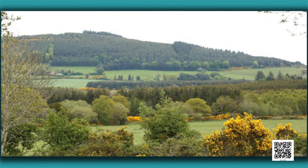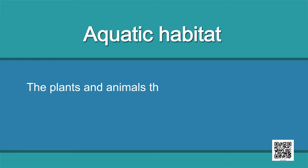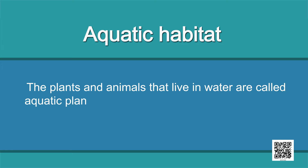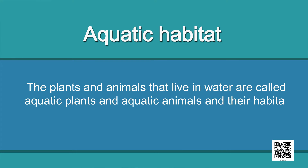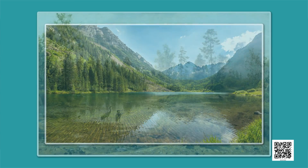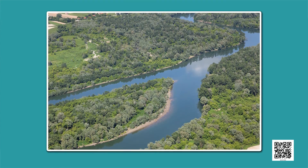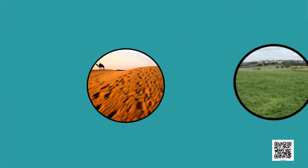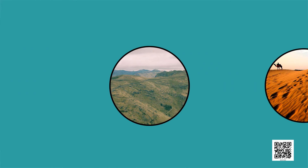On the other hand, the plants and animals that live in water are called aquatic plants and aquatic animals, and their habitats are called aquatic habitats. For example, ponds, swamps, lakes, rivers and oceans. There are large variations in forests, grasslands, deserts, coastal and mountainous regions located in different parts of the world. This is true for all aquatic habitats as well.